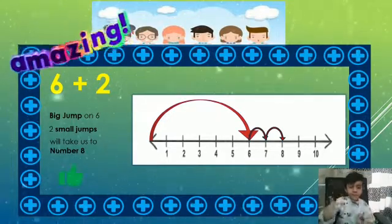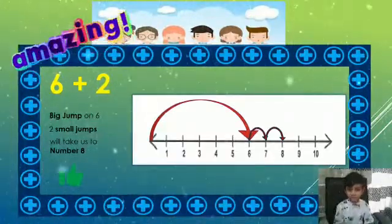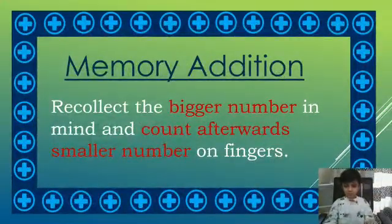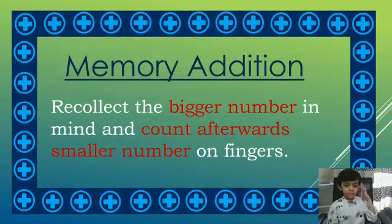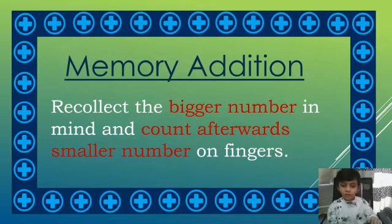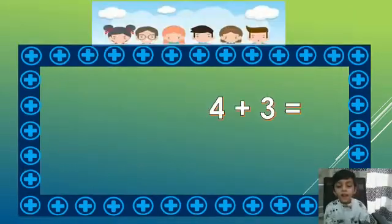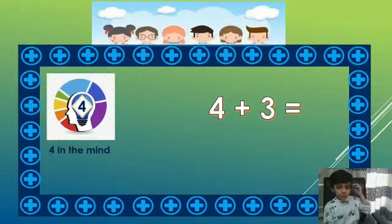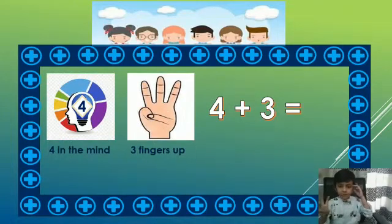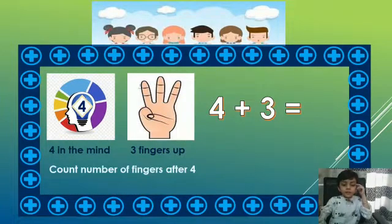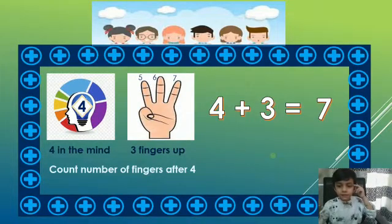That will take us to 8. Here we will learn memory addition. Recollect the bigger number in the mind and count after it using the smaller number on your fingers. Like 4 plus 3: 4 in the mind, 3 fingers up — 5, 6, 7. 7 is the answer.